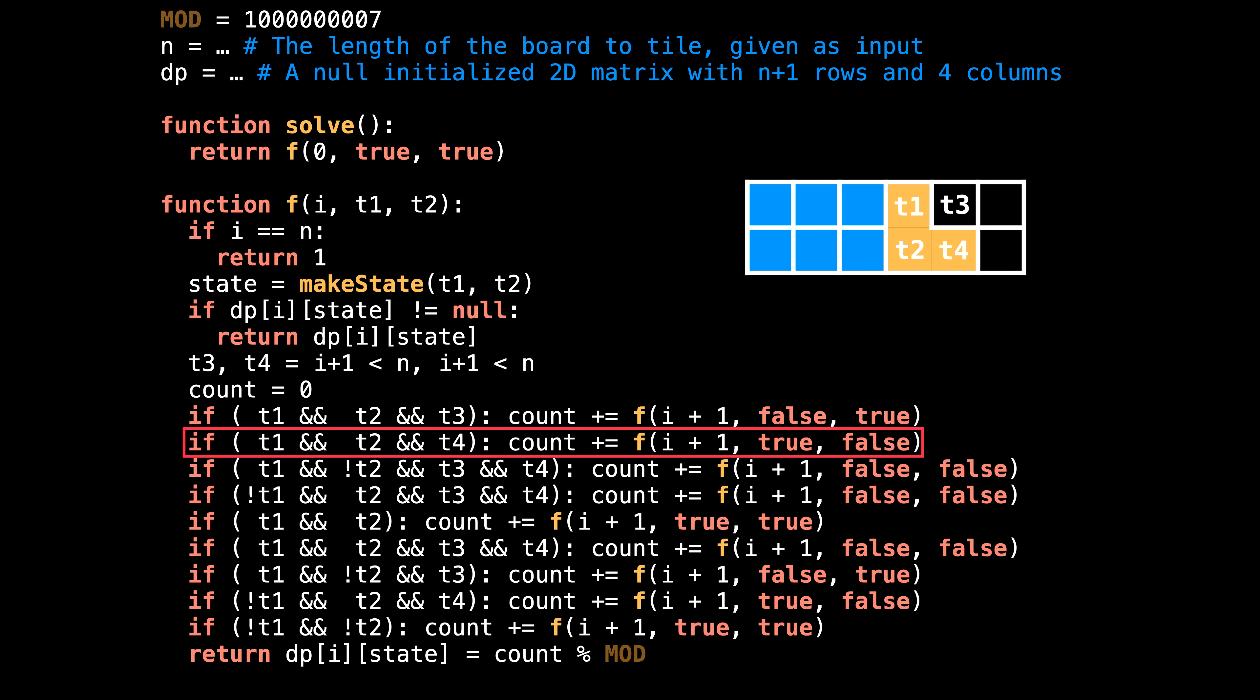In the next line, we place a symmetric tromino. So the only thing that changes is that we need to check if t4 is available and make sure that we block t2 in the next recursive call. Next, we check if we can place a rotated tromino when t2 is blocked. Before we place this rotated tromino, it is essential that we check that t2 is already tiled. Since placing the tromino without t2 being tiled would introduce a gap on the board. Then we have the same symmetric case. Only flipped on this next line, we check if t1 and t2 are free. And if so, then we can place a vertical domino. In this situation, t1 and t2 in the next column will both always be free. So we can call f with true and true.